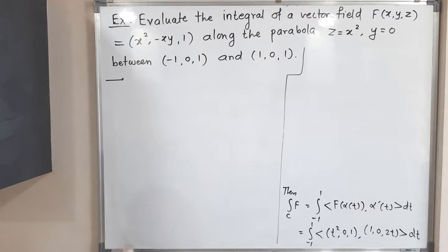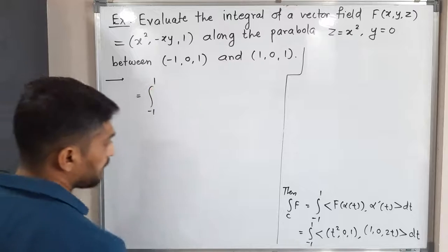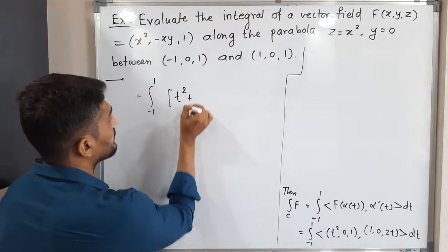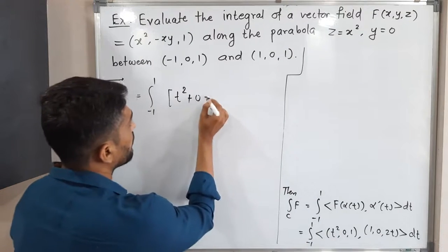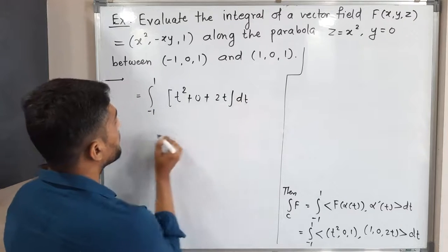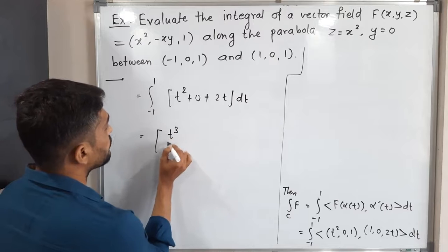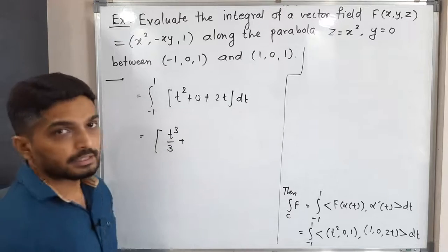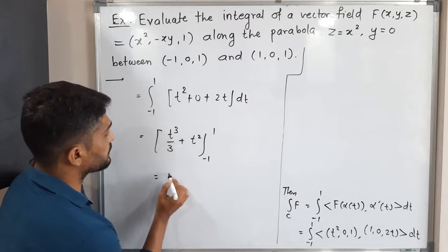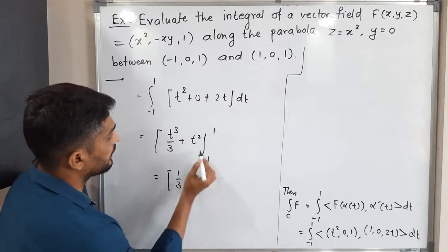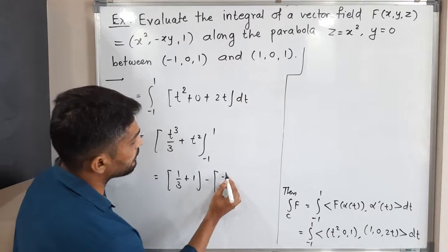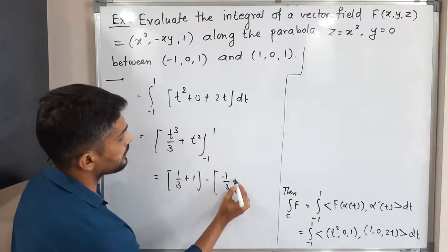So this equals the integral from -1 to 1 of (t²·1 + 0·0 + 1·2t) dt = integral from -1 to 1 of (t² + 2t) dt. Integrating: the integral of t² is t³/3, and the integral of 2t is t². Evaluating with limits from -1 to 1: upper limit gives (1/3 + 1), lower limit gives (-1/3 + 1).